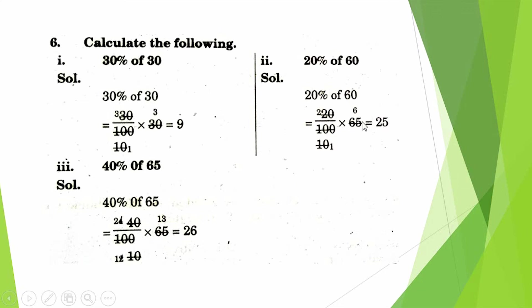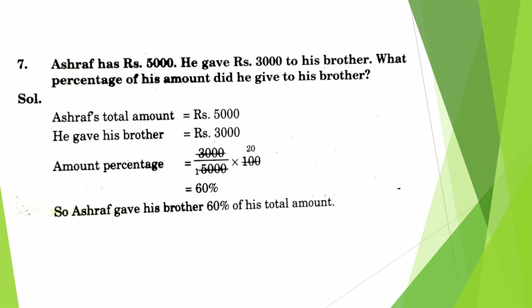20% of 60. We write 100 in place of percentage. 20/100 × 60. The answer comes 12. 40% of 65. We write 100 in place of percentage. 40/100 × 65. Answer comes 26.